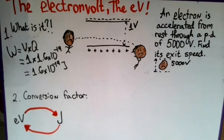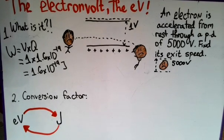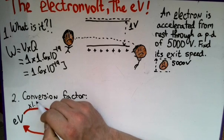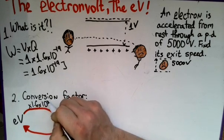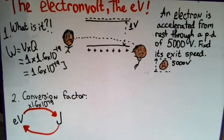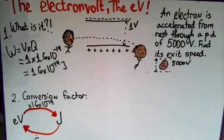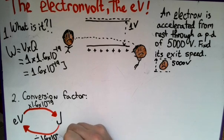This equation gives us the conversion factor. If we're going from electron volts to joules, all we need to do is multiply by 1.6 × 10⁻¹⁹. A good rule of thumb is that if you see the eV sign, you have to multiply by it. On the other hand, if you're going from joules back to electron volts, what you need to do is divide by that number — divide by 1.6 × 10⁻¹⁹.